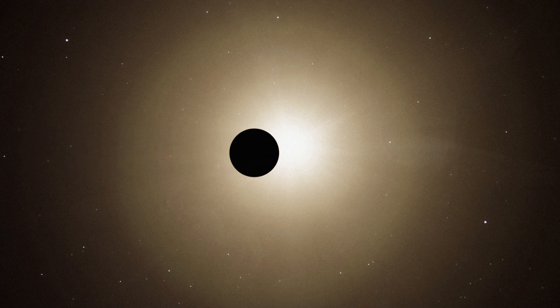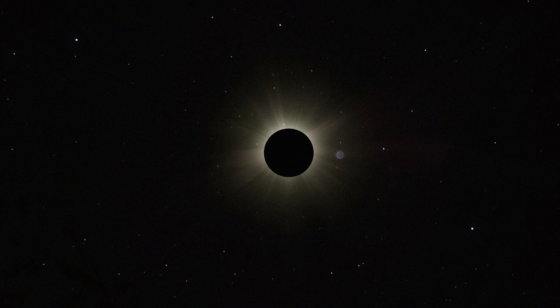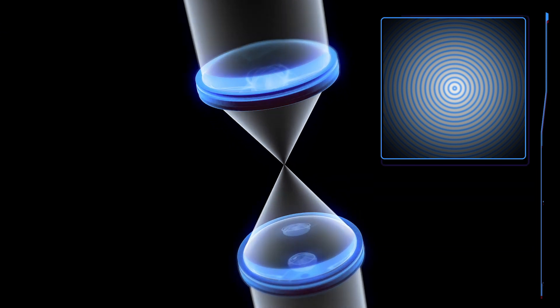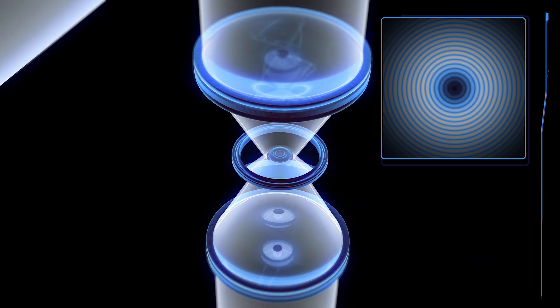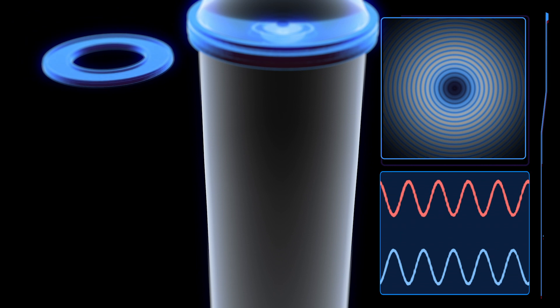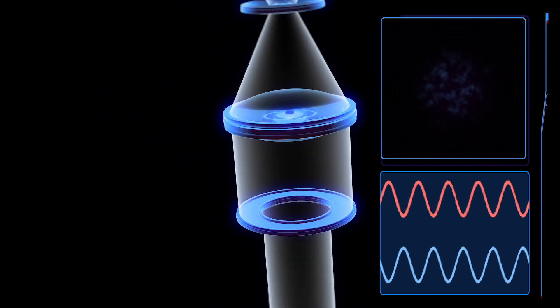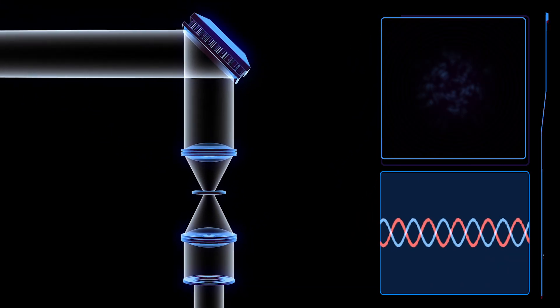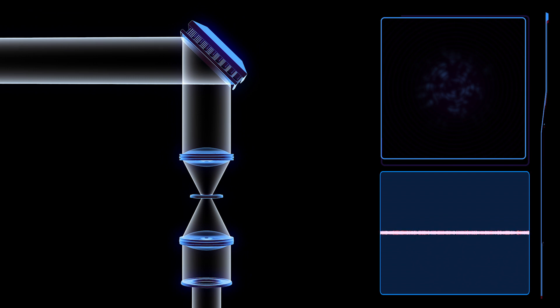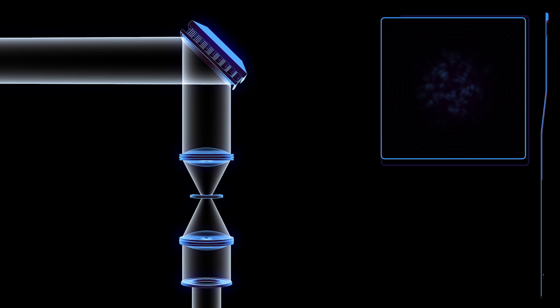WFIRST doesn't block the star's light with an opaque disk as a simple coronagraph might. Instead, it uses a combination of disks with complex patterns and light-blocking stops to create destructive interference with the star's light, effectively making it disappear, while allowing the light from planets to pass through.